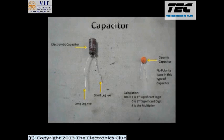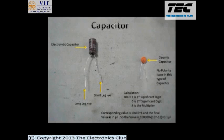Now we will learn how to calculate the value of a particular capacitor. We can see a number 104 written on a ceramic capacitor. 1 is the first significant digit, 0 is the second significant digit, while 4 is the multiplier. To calculate the value, write it as 10 into 10 raised to the power 4, and this final answer is in picofarad. So the final value gives us 0.1 microfarad. Therefore, this ceramic capacitor is of value 0.1 microfarad.